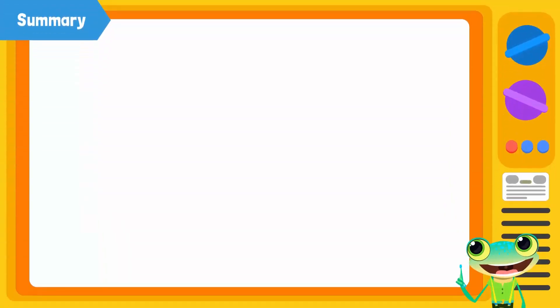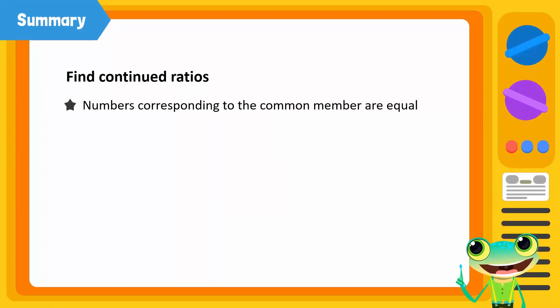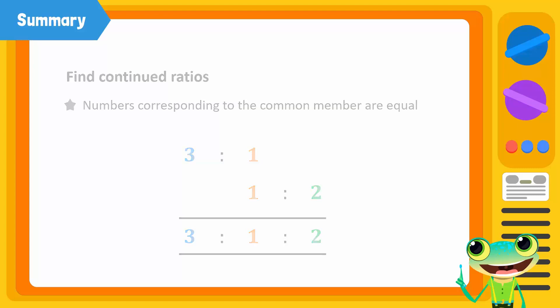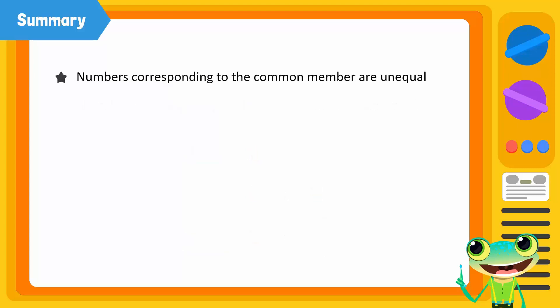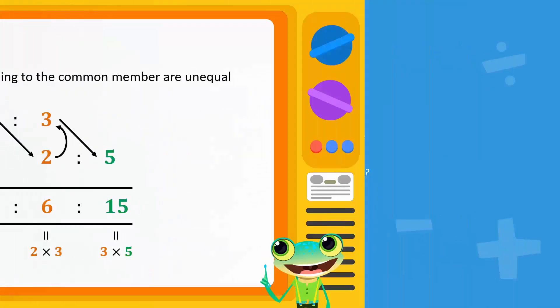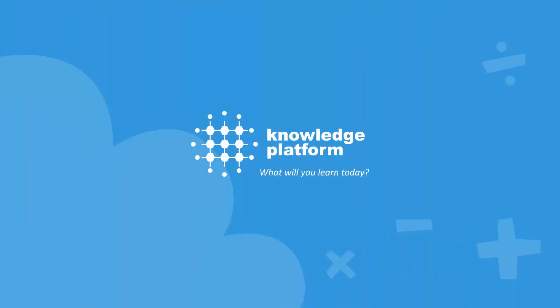In this video, we learnt how to find continued ratios. If the numbers corresponding to the common member of the ratios are equal — such as 3 to 1 and 1 to 2 — the ratios can simply be combined as 3 to 1 to 2. If the numbers corresponding to the common member are unequal — such as 2 to 3 and 2 to 5 — we have to multiply the ratios to obtain the same value for the common member. Good luck. Thank you.